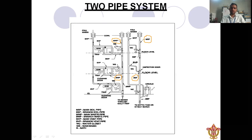In the two pipe system, only WC water goes through the soil pipe. The waste pipe carries water from the wash basin, sink, and other fixtures, and both pipes are independent. You can see on the image that the soil pipe goes directly to the septic tank, while the waste pipe goes to the sewer through a gully trap.